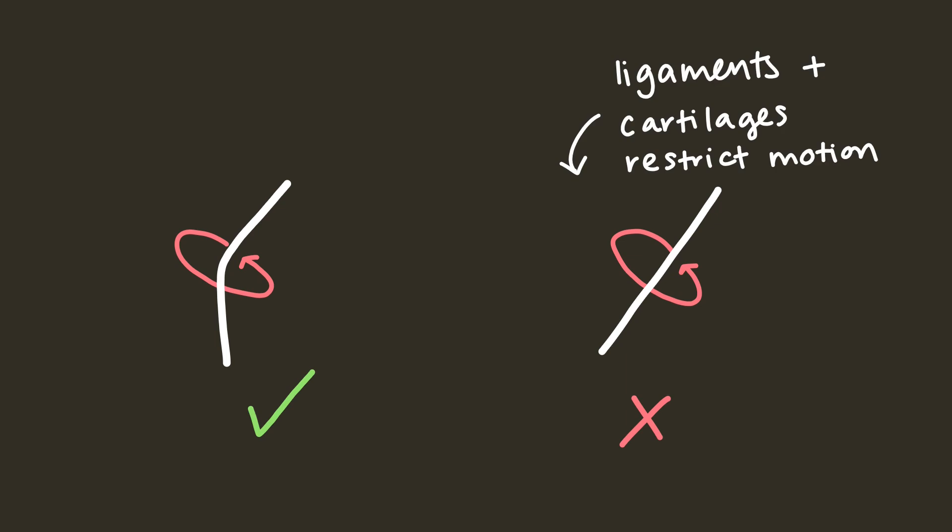We can rotate our knee somewhat when it's not fully extended, but when it is, we really can't. This is because the motion is restricted due to the ligaments and the menisci.